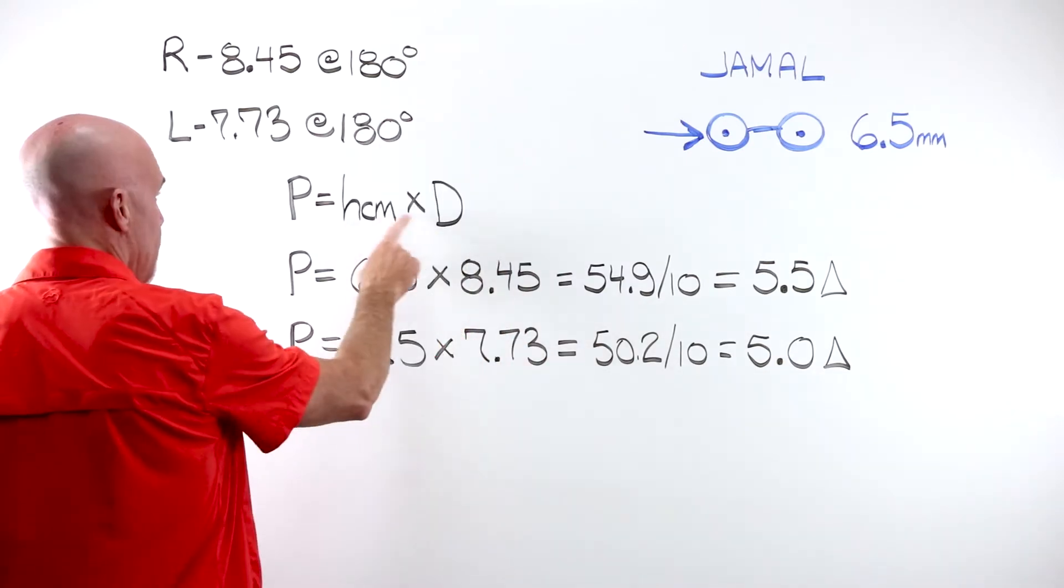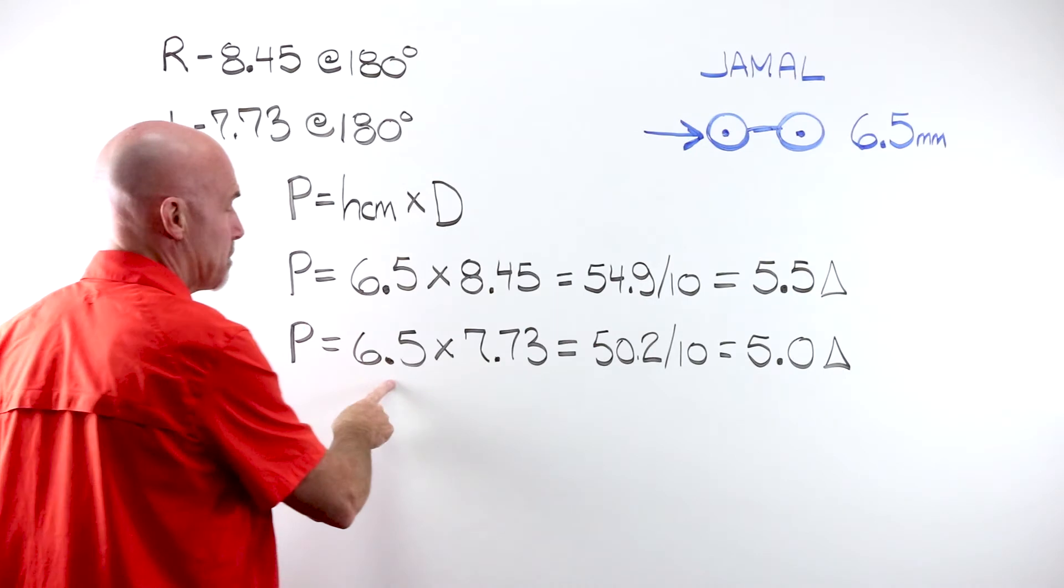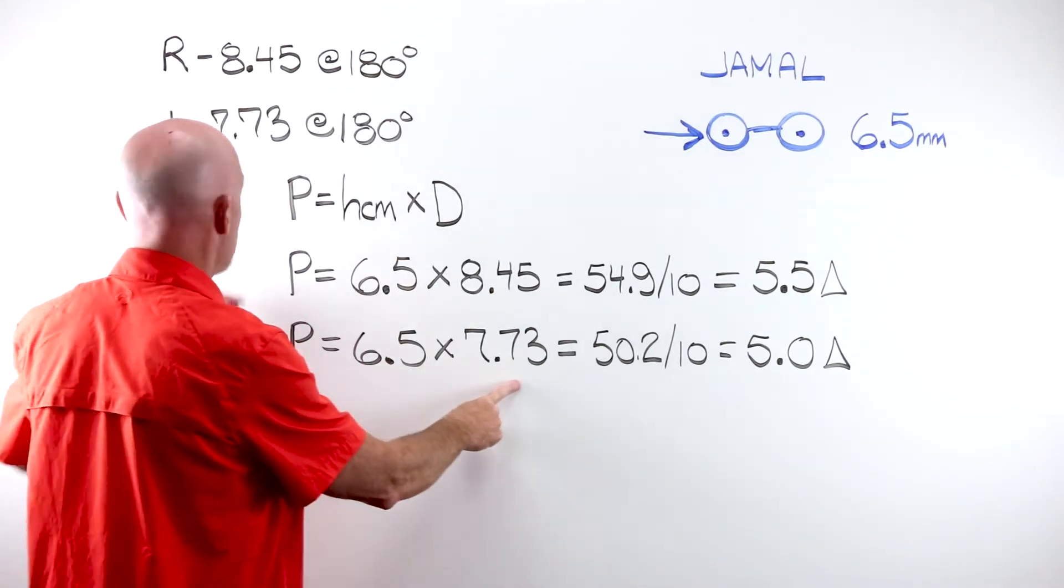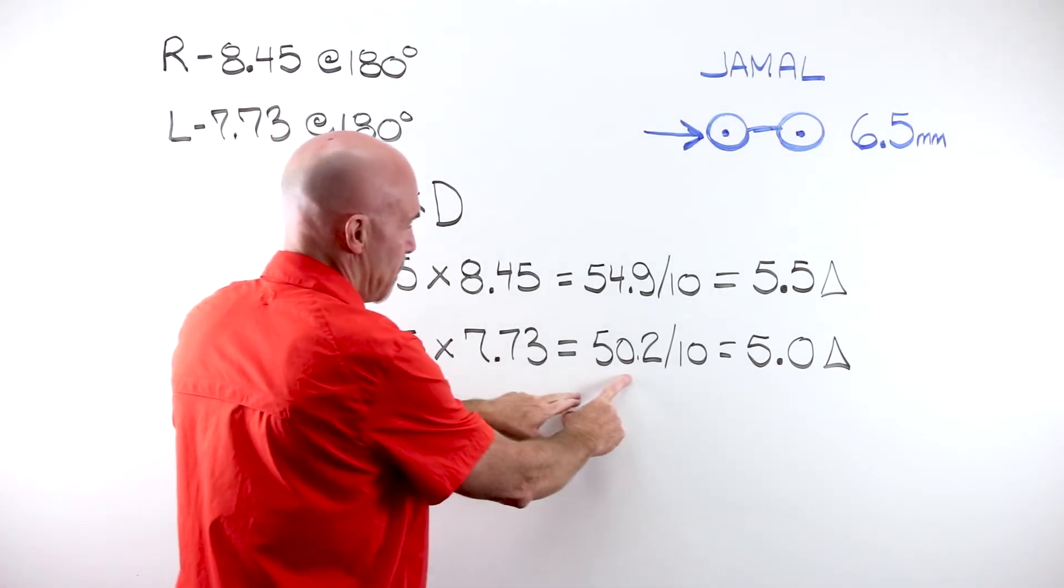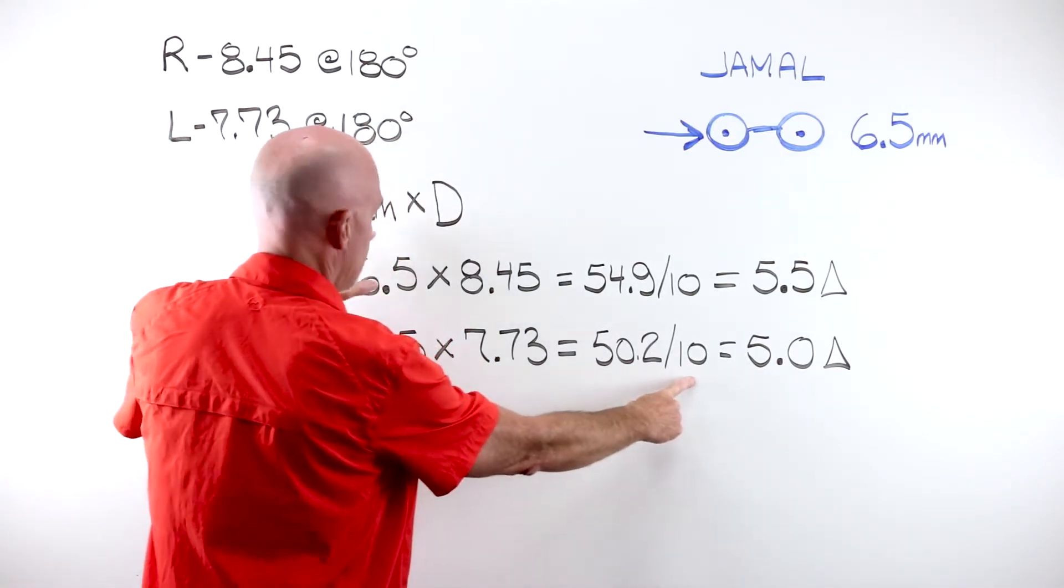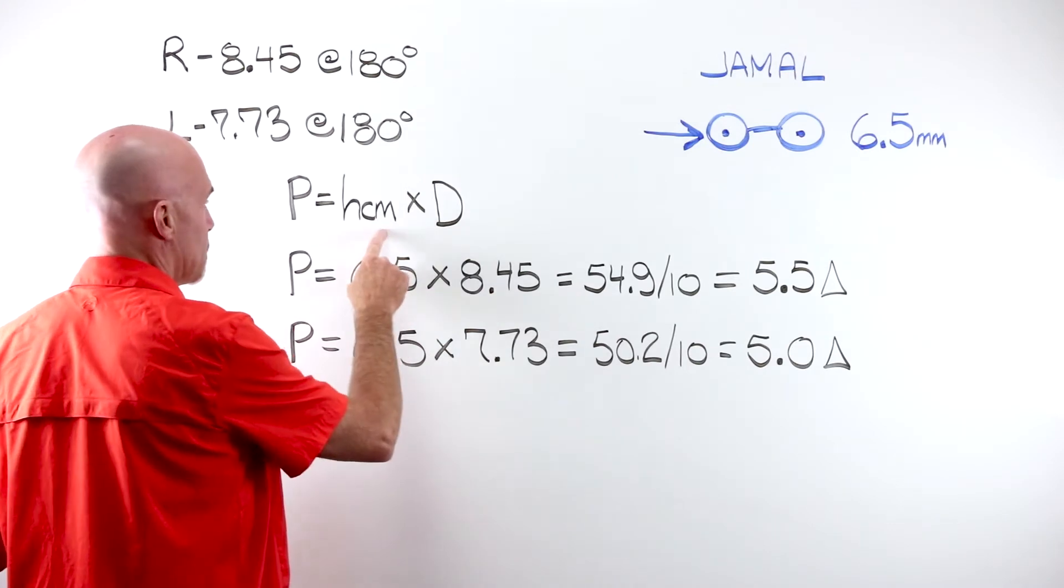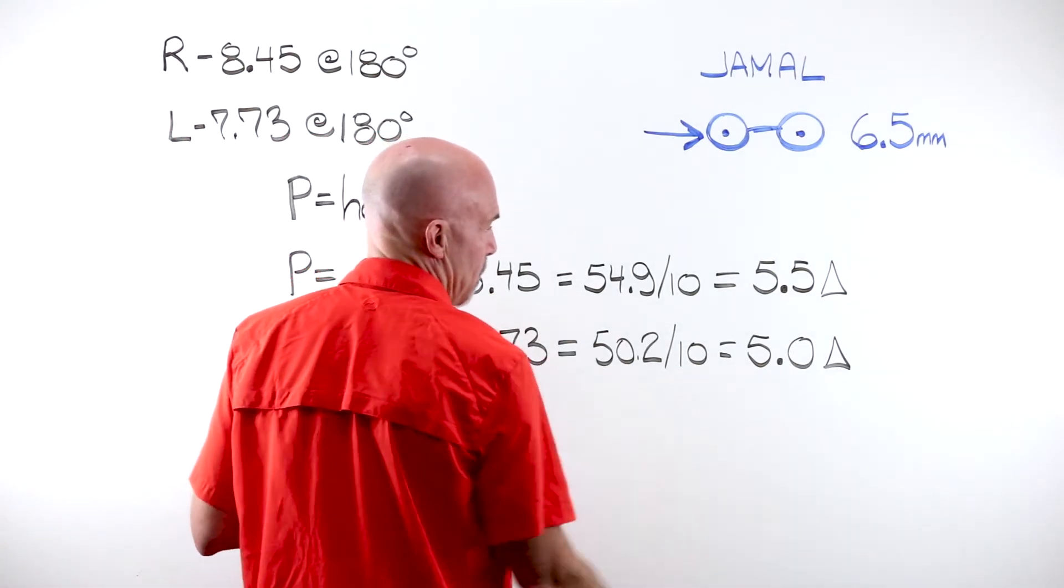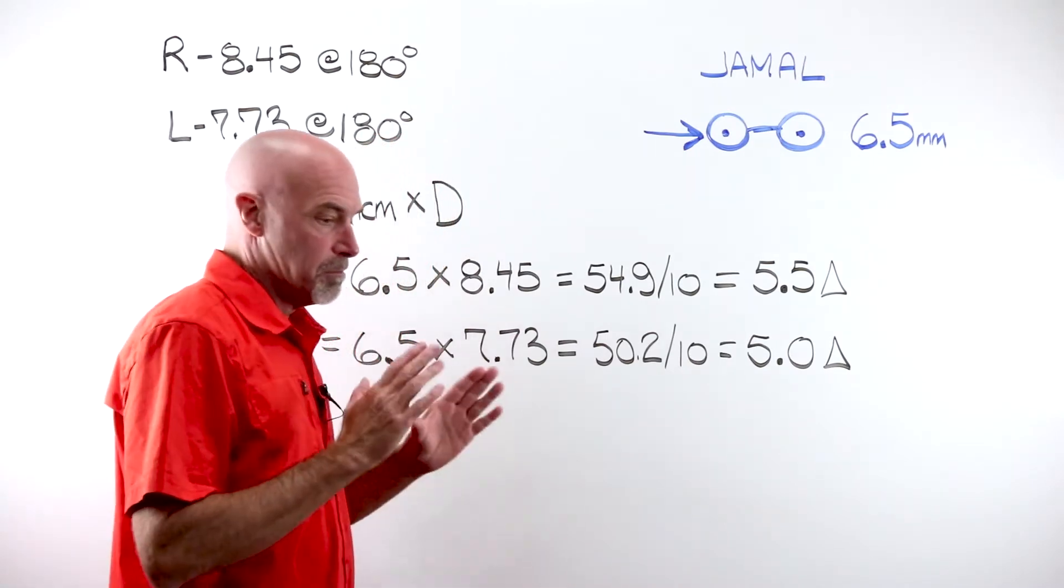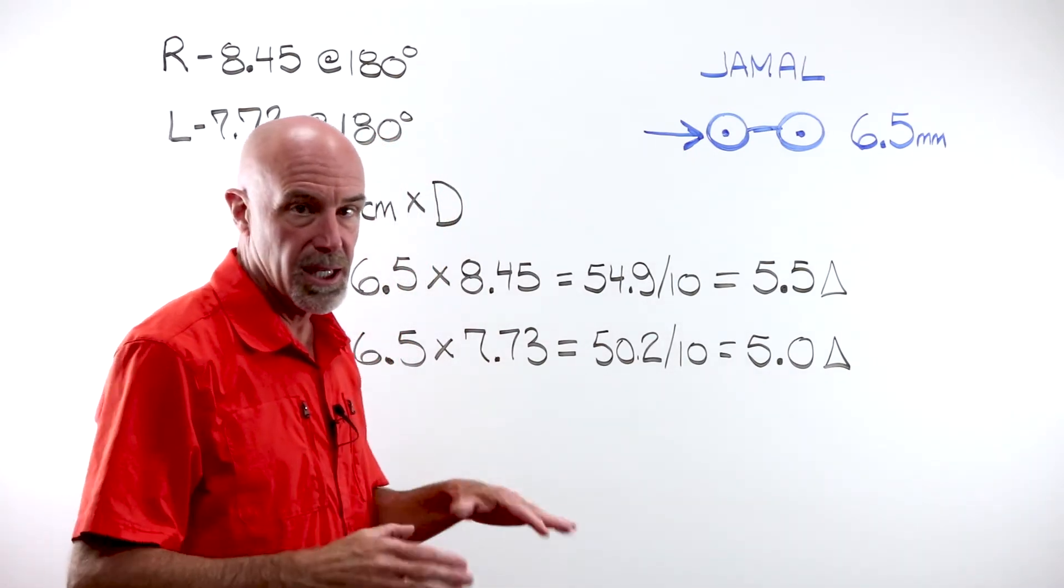Super important. HCM times D, the amount the lens moved, 6.5. Multiplied times the power in the lens at that meridian. We end up with 50.2, divide by 10 to convert our millimeters from centimeters, and we end up at 5.0 prism diopters created in that lens.